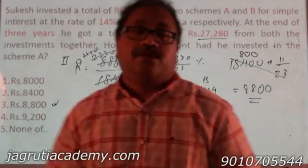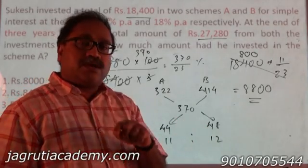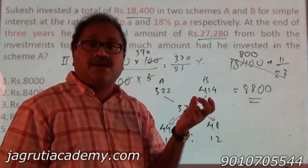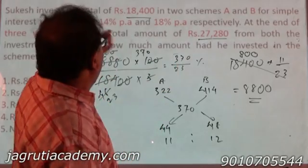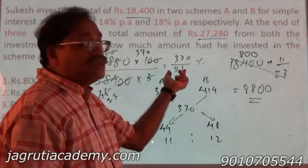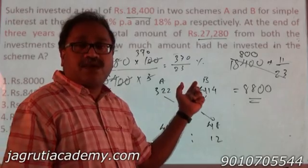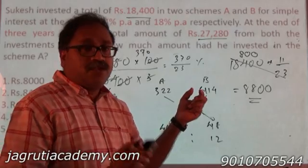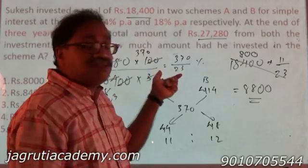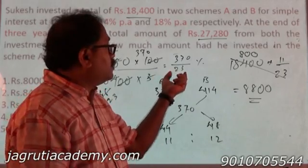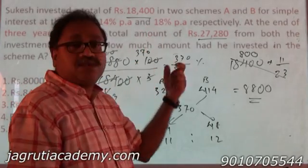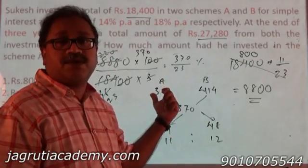I recommend going with this second method in competitive exams. In competitive examinations the overall percentage is usually a round integer — between 14% and 18% it is generally 15%, 16%, or 17%. But even if it comes out as a fraction, it is not complicated: just convert all percentages to the same denominator as we did here with 23. So please follow the second method rather than the first.